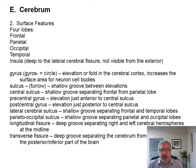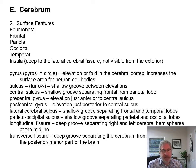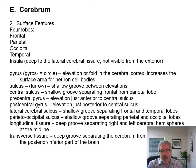So, just to review the cerebrum, you've got the surface features, you've got four lobes: frontal, parietal, occipital, temporal. The insula is deep to the lateral cerebral fissure, the lateral fissure.